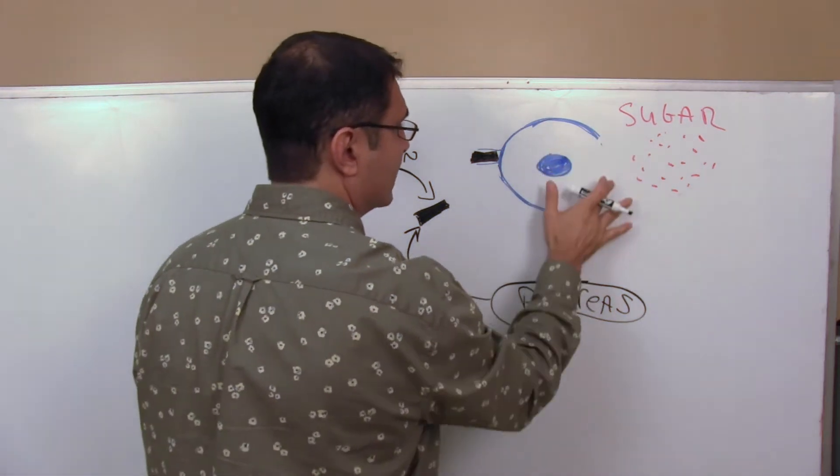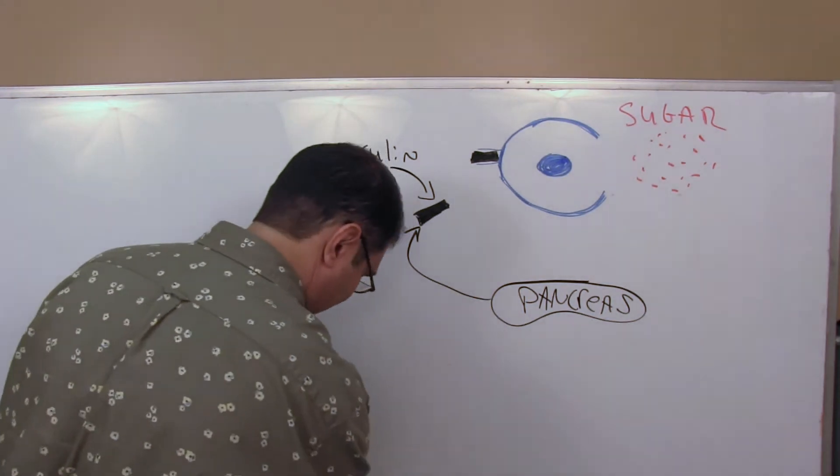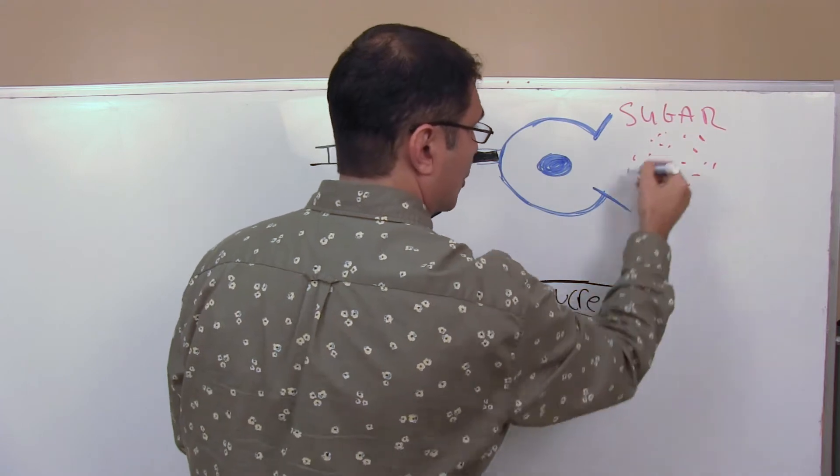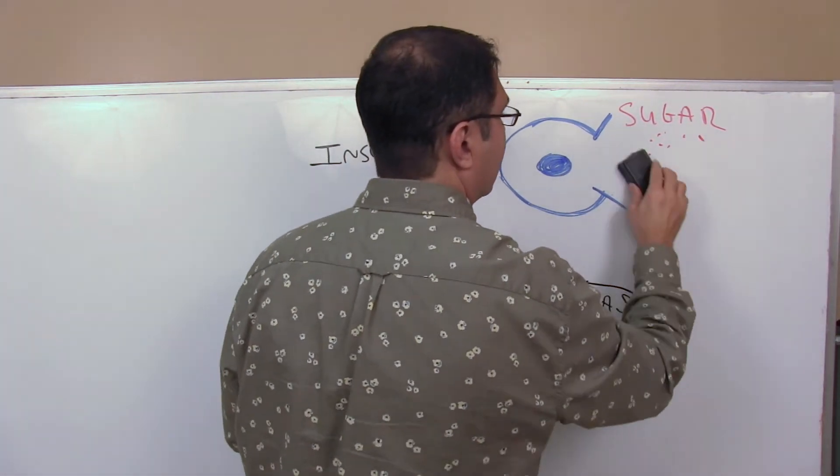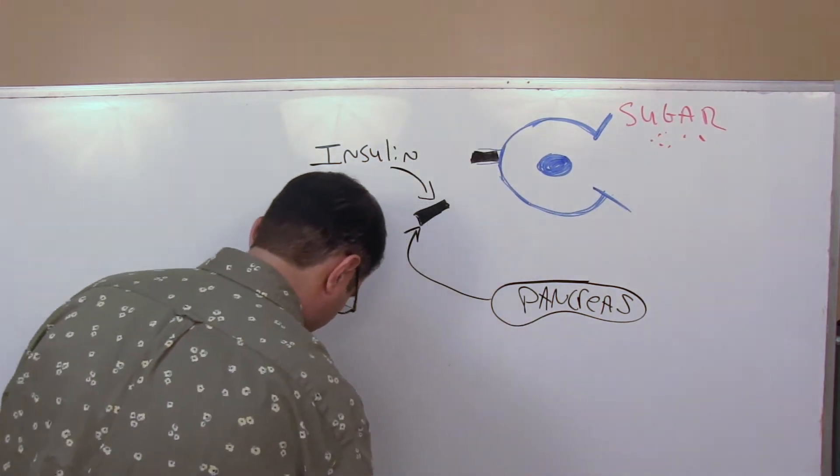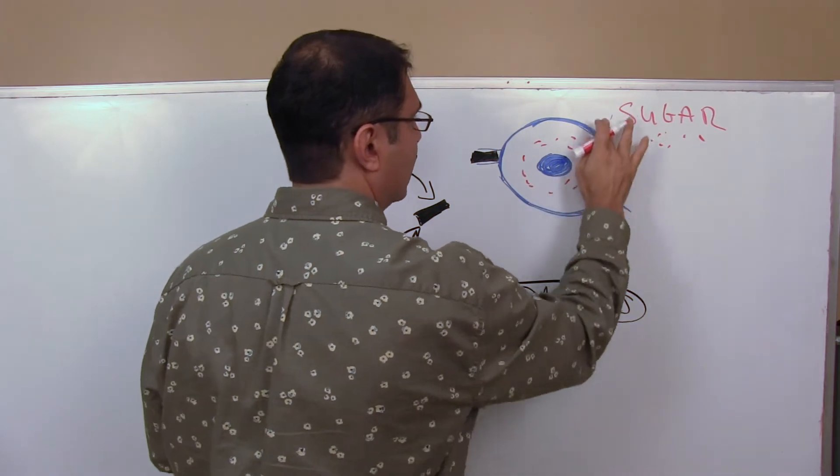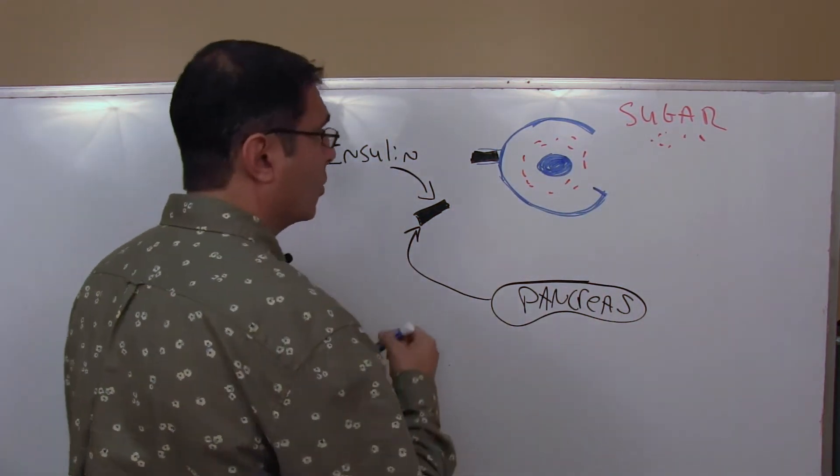So what actually happens is the cell, now it doesn't really do exactly what I'm showing you, but for all intents and purposes, this is what happens. The cell opens up and the sugar from the blood leaves the blood to a degree. We still have some left, but the sugar from the blood leaves the blood and it goes into the cell. And then the cell in the pancreas is happy. It doesn't release any more hormone.